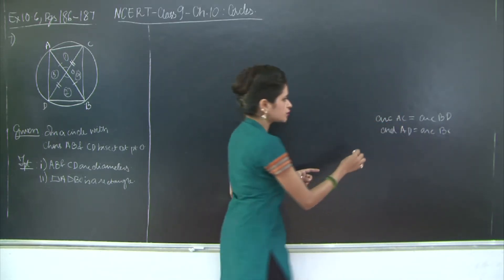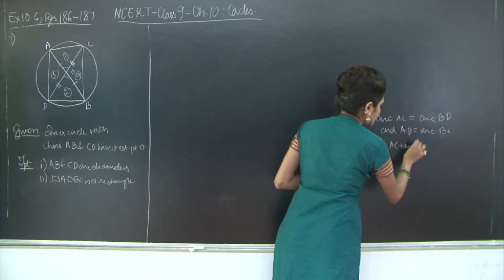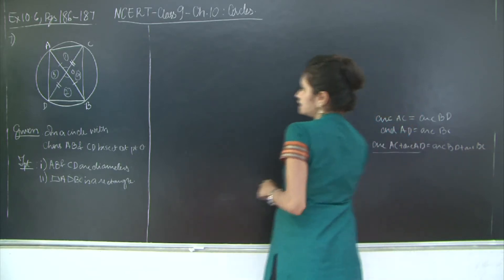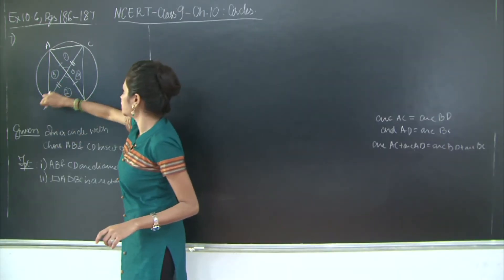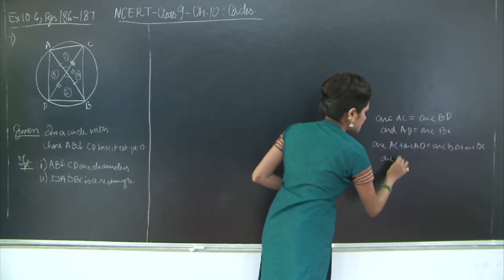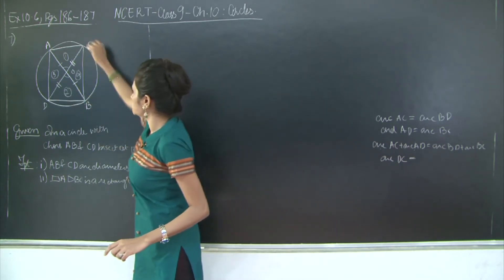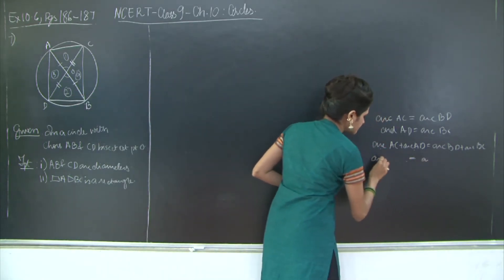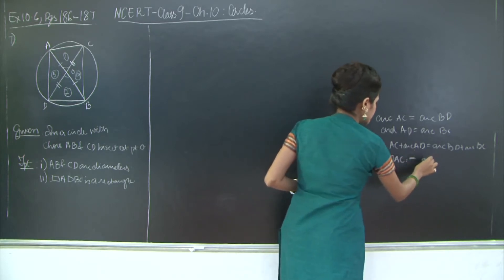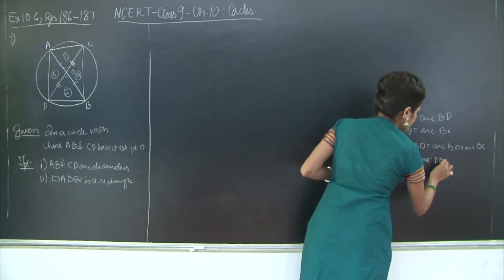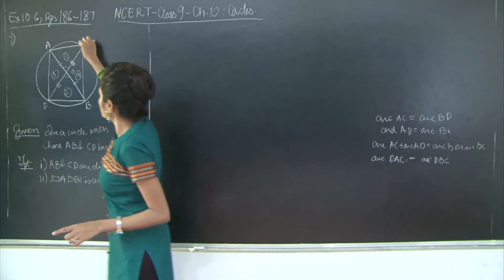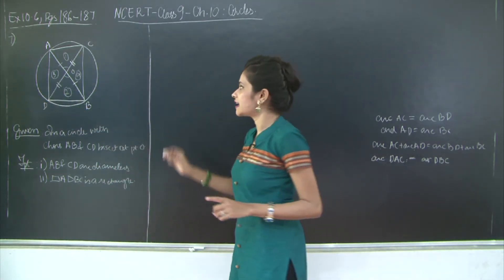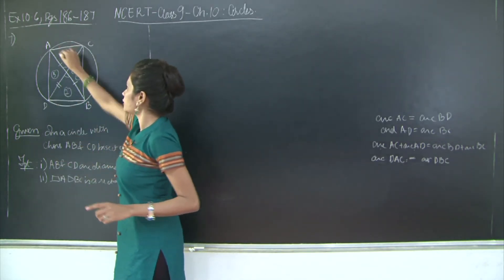When you add these two results, arc AC plus arc AD equals arc BD plus arc BC. Arc AC plus arc AD gives the entire arc DAC, and arc BD plus arc BC gives arc DBC. So arc DAC equals arc DBC, meaning chord CD is dividing the circle into two equal semicircles. Therefore chord CD is the diameter. Similarly we can prove that AB is the diameter.